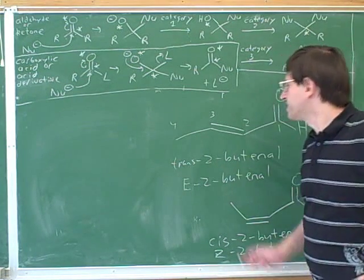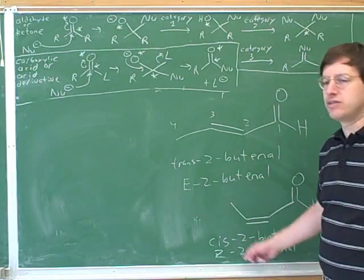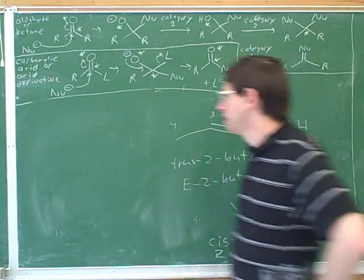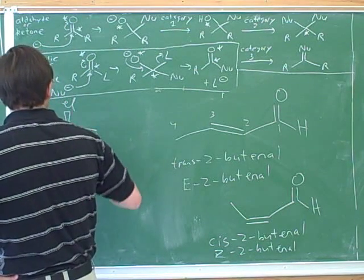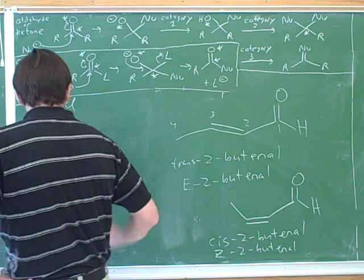So for double bonds, it's always safest to use E and Z because that always works. Should we just completely forget about cis and trans and replace that in our brains with E and Z? Because why always lean towards the trans?